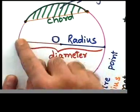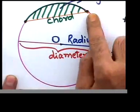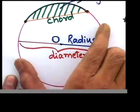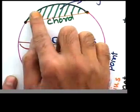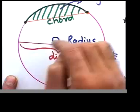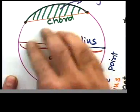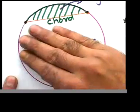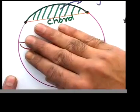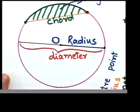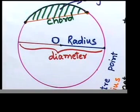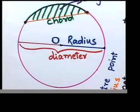Because this arc is big in size, we call it a major arc, and the small one is called a minor arc. At the same time, this particular space — that whole thing there — is called a major segment, and this is called a minor segment. So we have defined a segment.